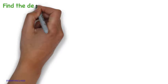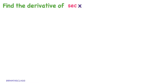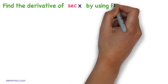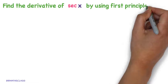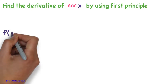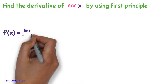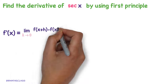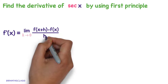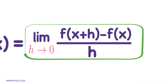Find the derivative of secant x by using first principle. We know what is the first principle of derivative: f dash of x equals to limit h tends to 0, f of x plus h minus f of x, divided by h. This expression is called the first principle of derivative.